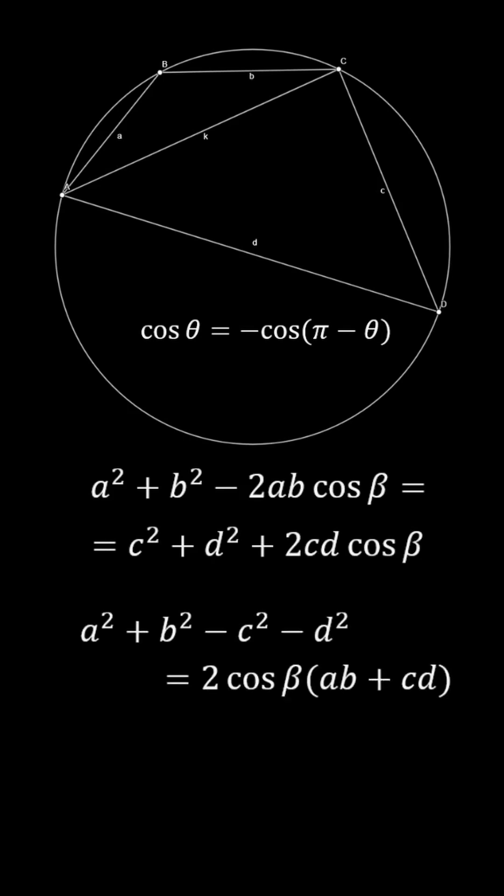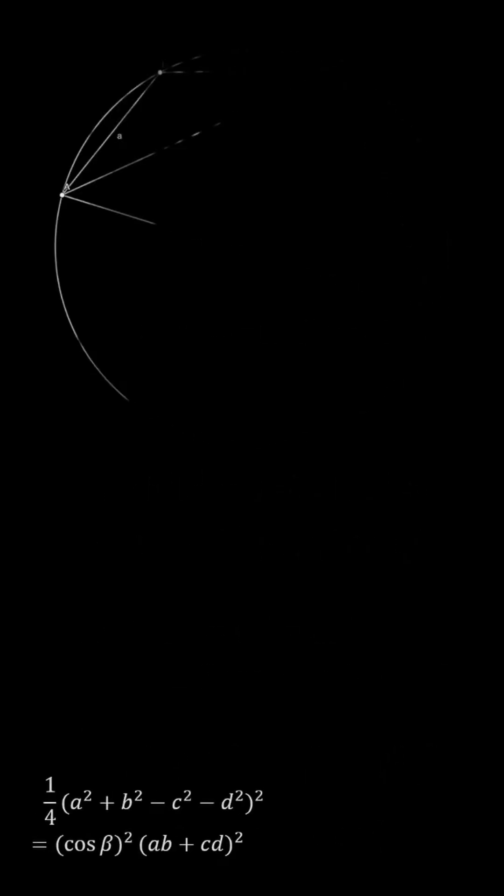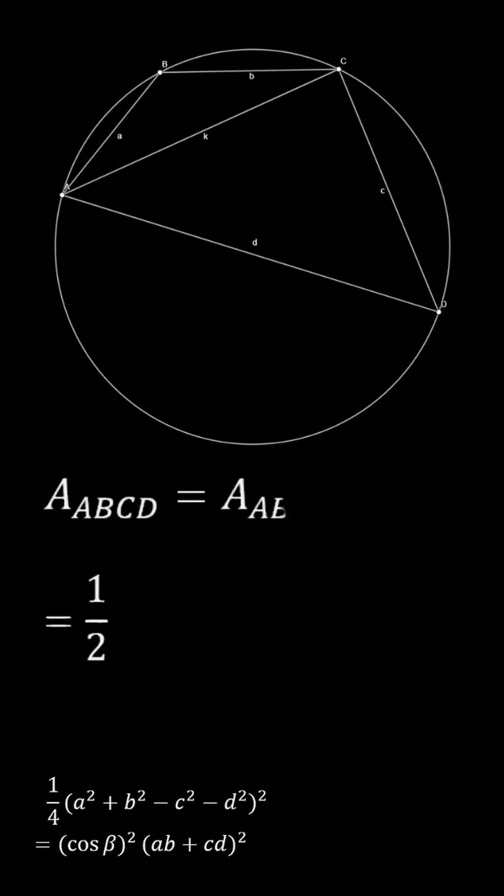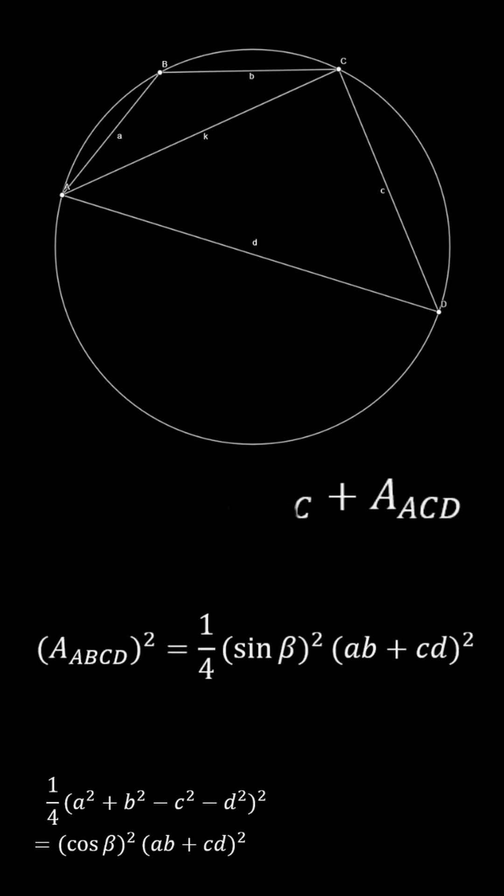If we move this around a bit and square both sides, we get this expression on screen. But why is this important? Because, going back to our area expression and squaring it, then using the Pythagorean identity to change the sine into a cosine, we find the exact same expression.